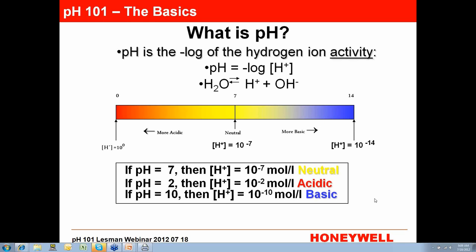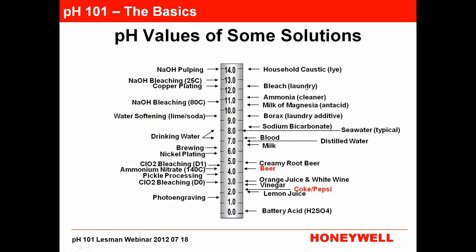The negative log of hydrogen ion concentration means we're just counting hydrogen ions in the process — that's all a pH sensor does. The pH scale is 0 to 14, more or less. If you're at a pH of 7, you have 10 to the minus 7 moles per liter of hydrogen ion. That's a neutral pH. If you're at pH of 2, then you have 10 to the minus 2 moles per liter. pH is a log function — it's not linear — and that's why it can be very difficult to control, because it gets away from you pretty easily.